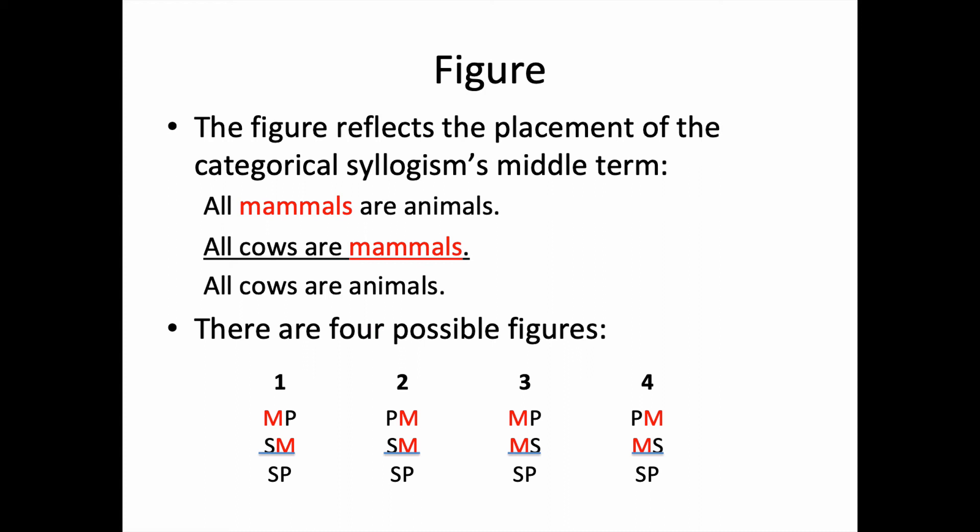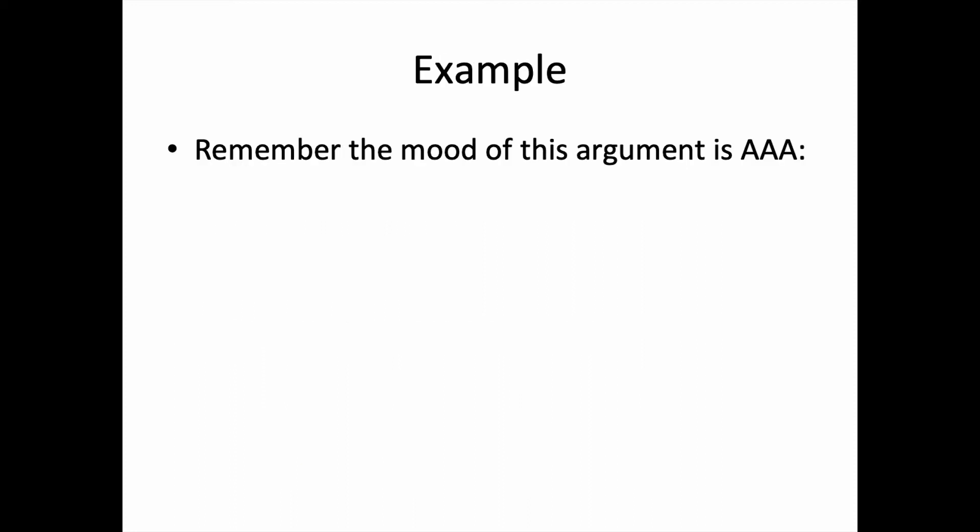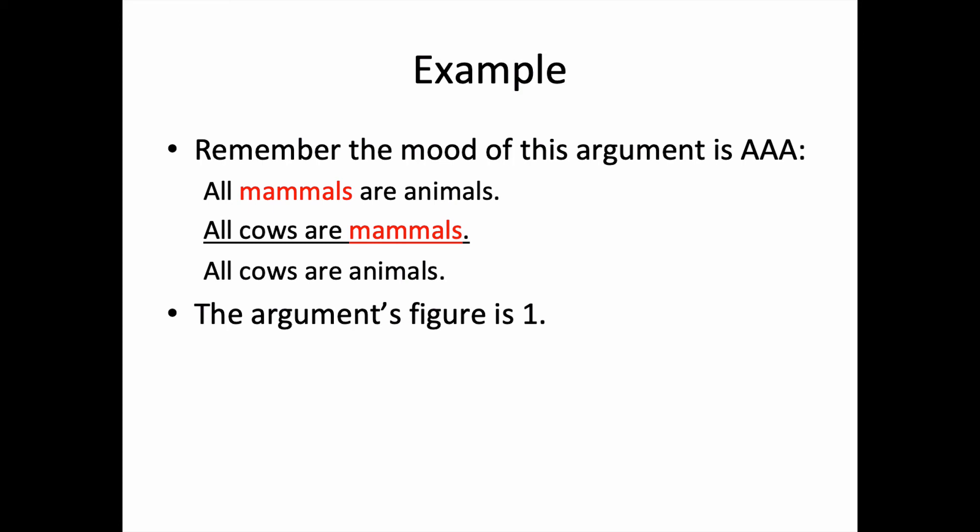Let's take a look now at the example that we've been working on, and let's put it all together. Remember, the mood of this argument is A, A, A. Here's the argument in standard form with the middle term highlighted. The argument's figure is 1, as you recall from our previous slide. Putting it all together, we get the argument's mood and figure, which is A, A, A, 1.